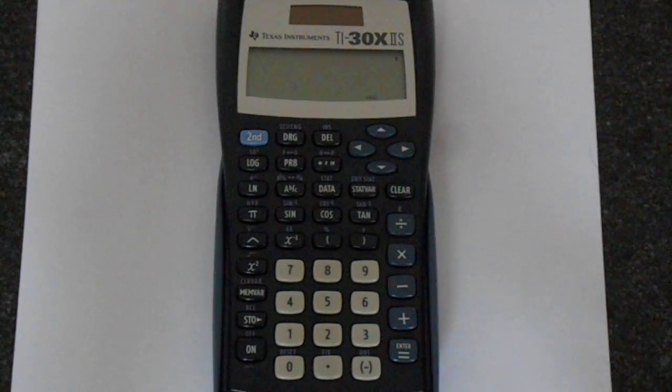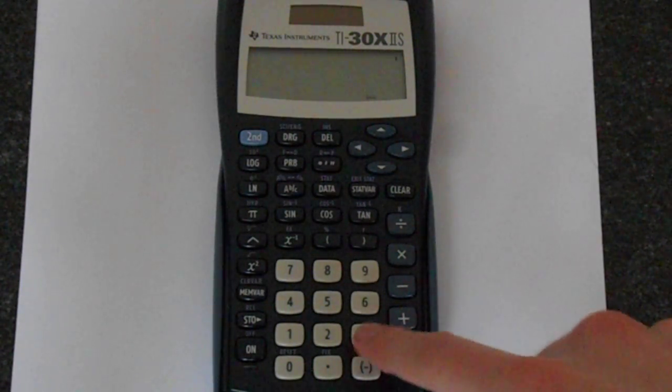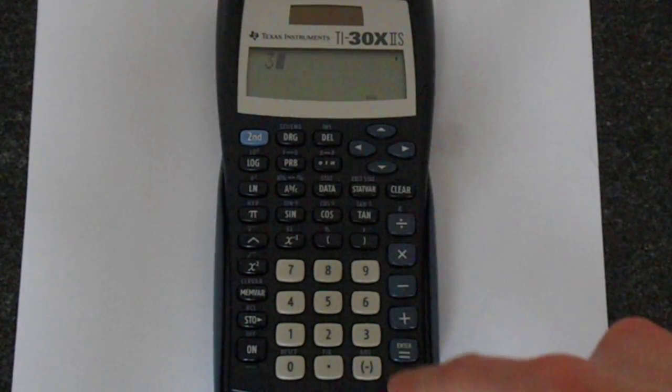I'll just show you where to find that. Let's just do 3 factorial, quite simple to understand. 3 times 2 times 1 is, of course, 6. So if you press 3 here, it's 3 in the display.